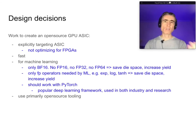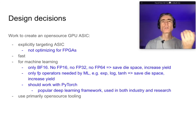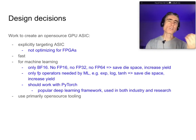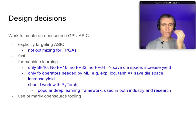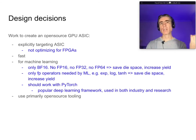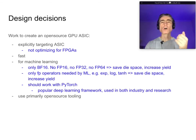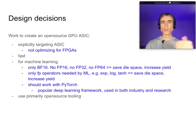No FP16, no FP32, no FP64. NVIDIA GPUs have to do all of these — BF16, FP16, FP32, FP64 — and that uses a lot of extra die space and reduces yield. By only doing BF16 we save die space and increase yield. Similarly, for the FP operators, there are some operators needed by machine learning — specifically logarithms, exponential, possibly tanh — but there are many other operators we don't need. So we can just not implement those. That saves more die space and increases yield.